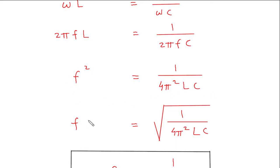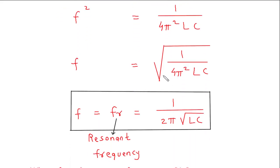Now to find F, F is equal to the square root of 1 upon 4π² LC. The square root of 1 is 1 and square root of 4π² is 2π, and square root of LC is √LC.